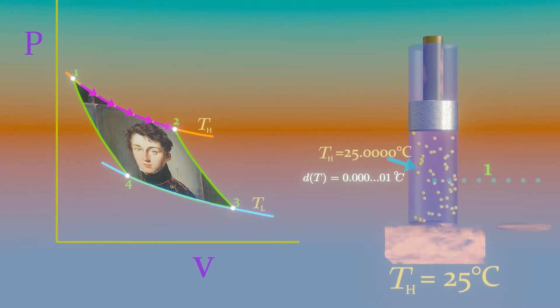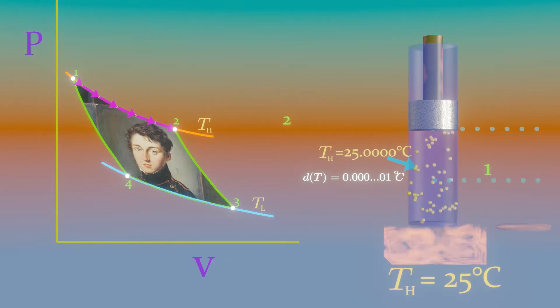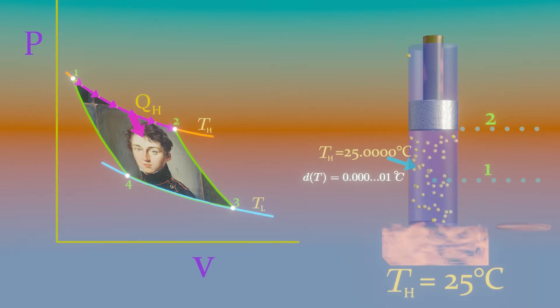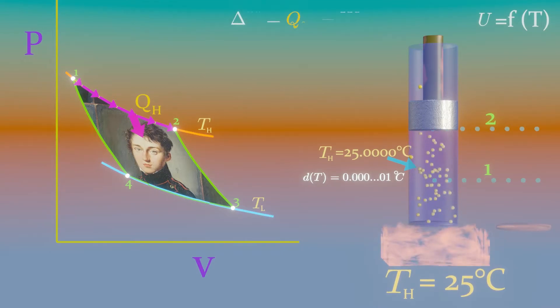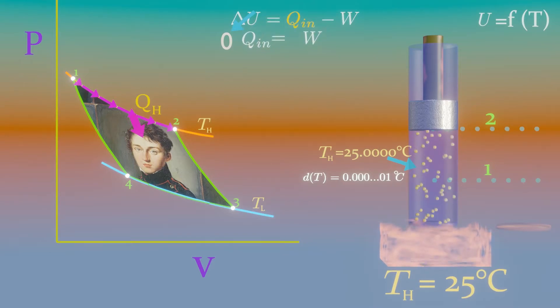It continues until the piston reaches position 2. The amount of total heat transferred to the gas during this process is QH. For an ideal gas, internal energy is a function of temperature only, and if the temperature is kept constant then change in internal energy shall be zero. That's why according to first law every heat given is converted to work done.